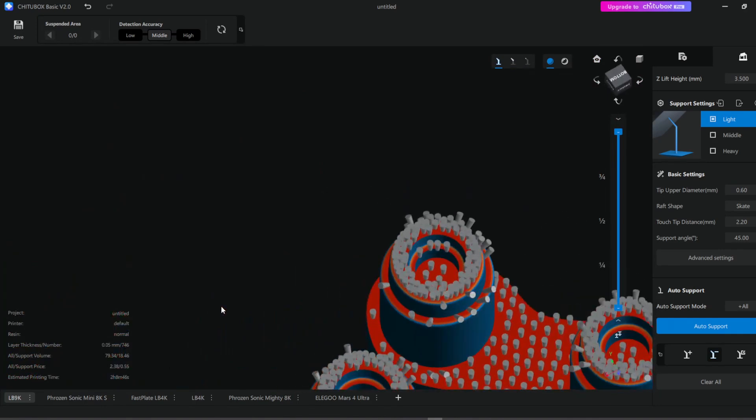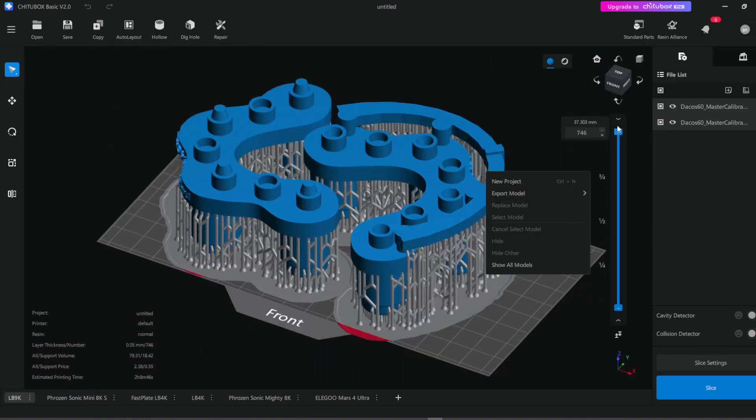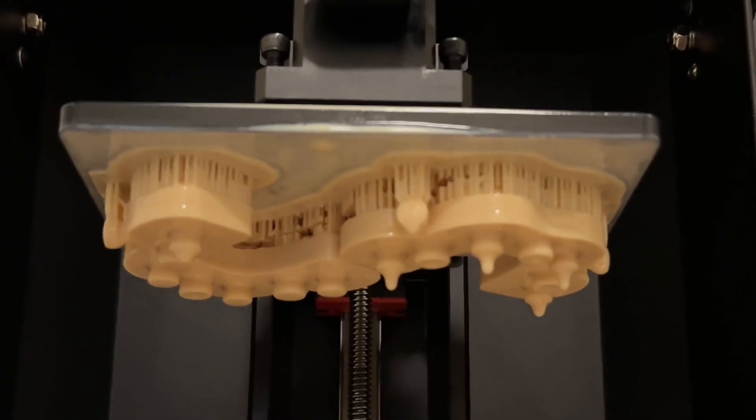If any supports are present, remove them manually to avoid compromising the stability of the calibrators. After verifying this, proceed with slicing and printing the calibrators.